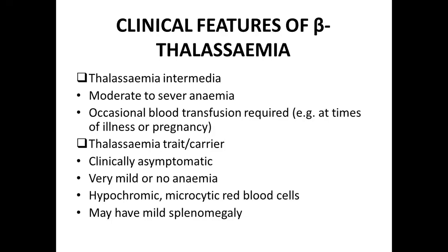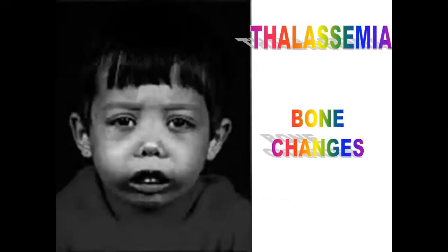Thalassemia minor carriers are clinically asymptomatic; at times they have very mild anemia and at times even no anemia. When anemia is present it is a hypochromic microcytic type, and at times they have mild splenomegaly. So these are the features of beta thalassemia major (Cooley's anemia), intermediate, and minor/carrier.